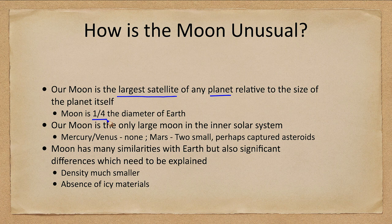Now there are comparable things in the outer solar system, such as the dwarf planet Pluto, which has a large moon relative to its size. But among the planets themselves, our moon is by far the largest. It's also the only large moon in the inner solar system.